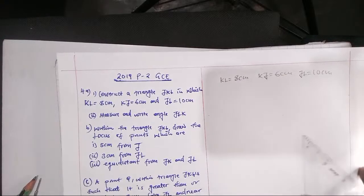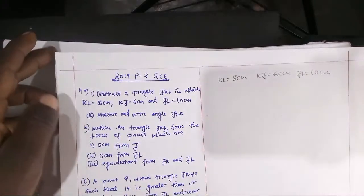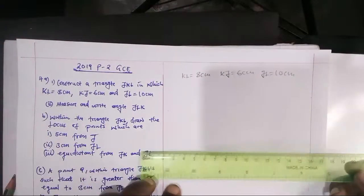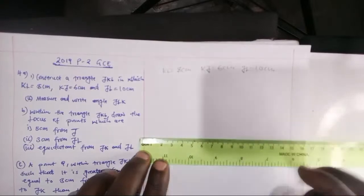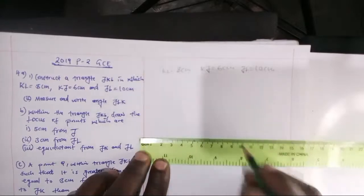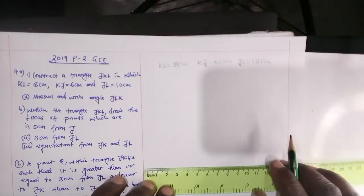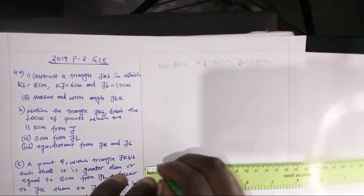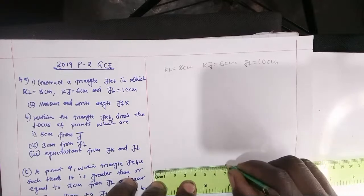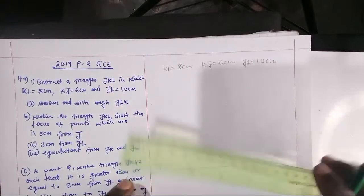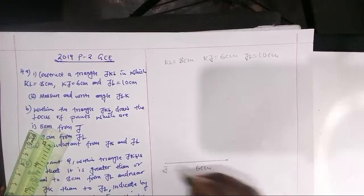Now we are going to measure 6 centimeters with the ruler. I'll start from 1 on the ruler since zero is behind, and end on 7 to get 6 centimeters. Then draw the line JK — starting from J and ending at K — so this is a line of 6 centimeters.